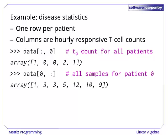and each column is an hourly count of responsive T cells. This means that the zeroth column of our data is the initial T cell count for all patients, while the zeroth row is an hourly sample for patient zero. As an exercise, check that you understand the slicing notation used here, and can explain why the slices are one-dimensional rather than two-dimensional.